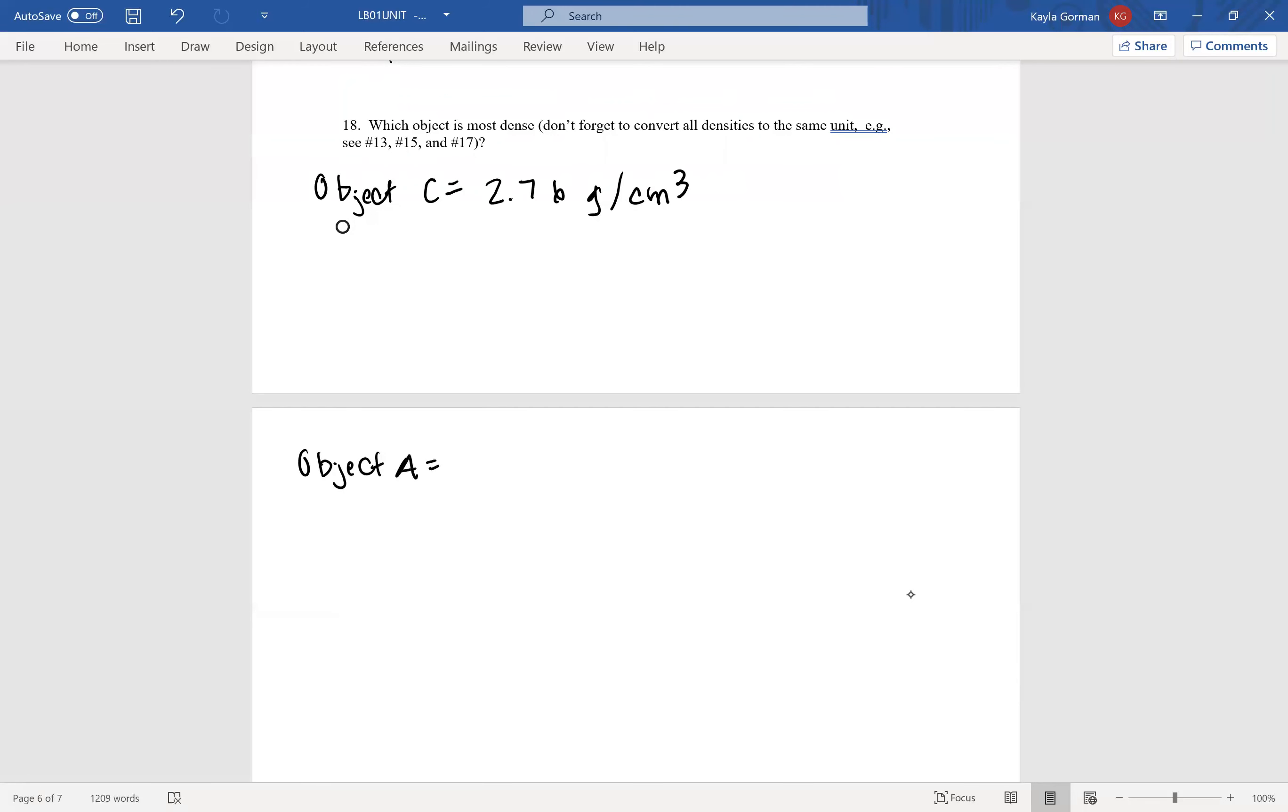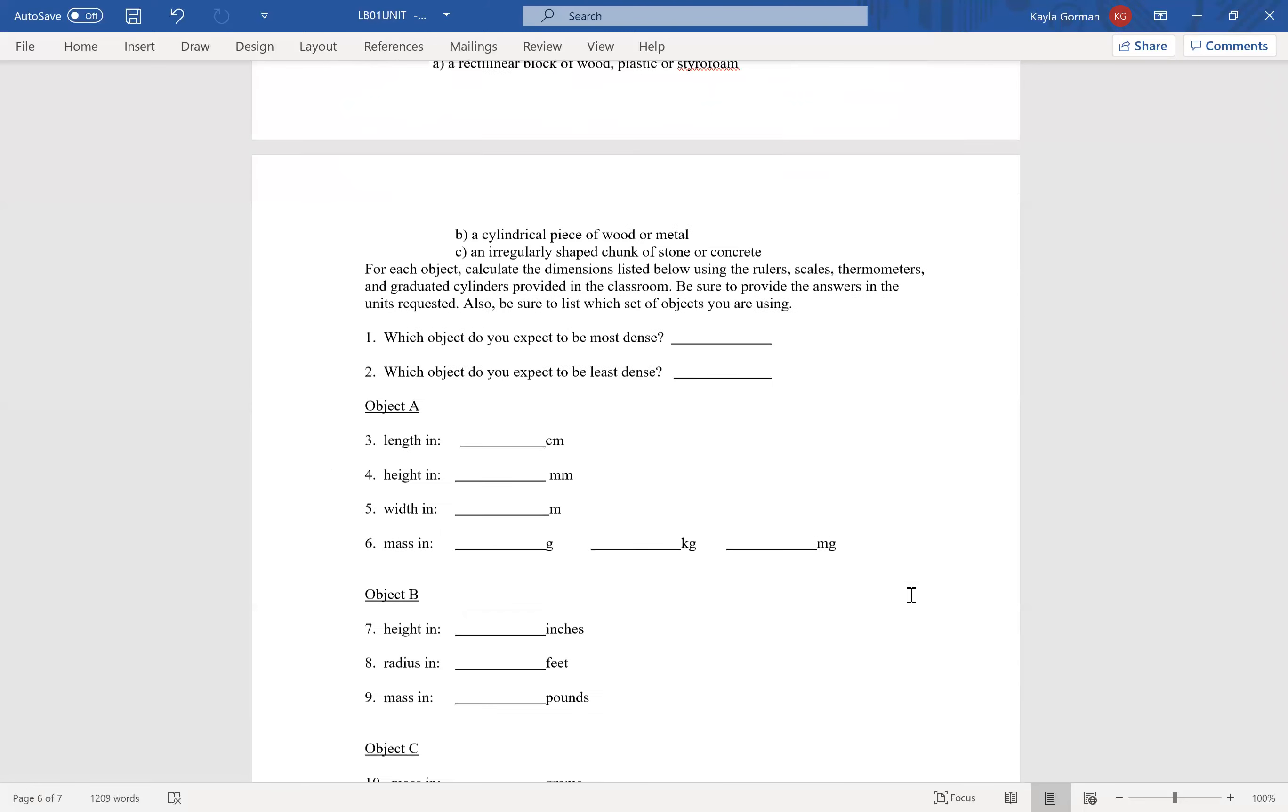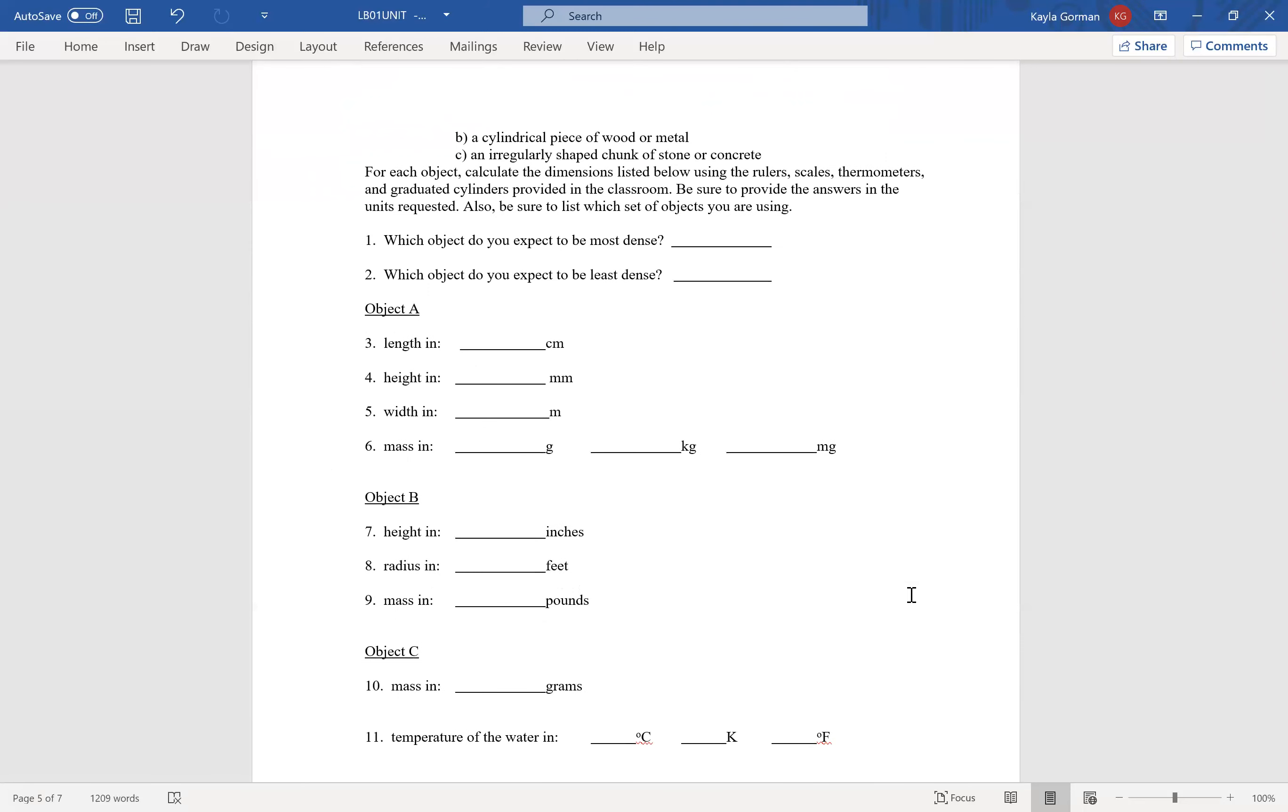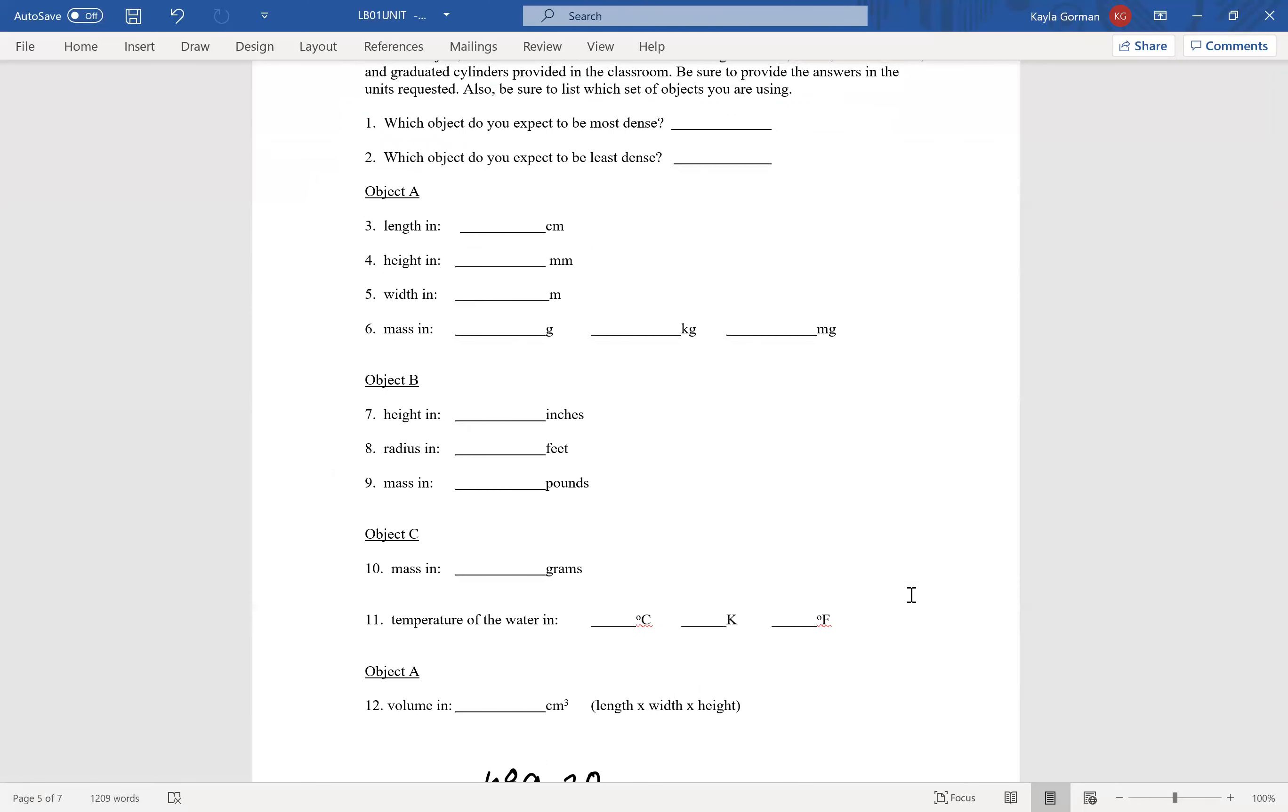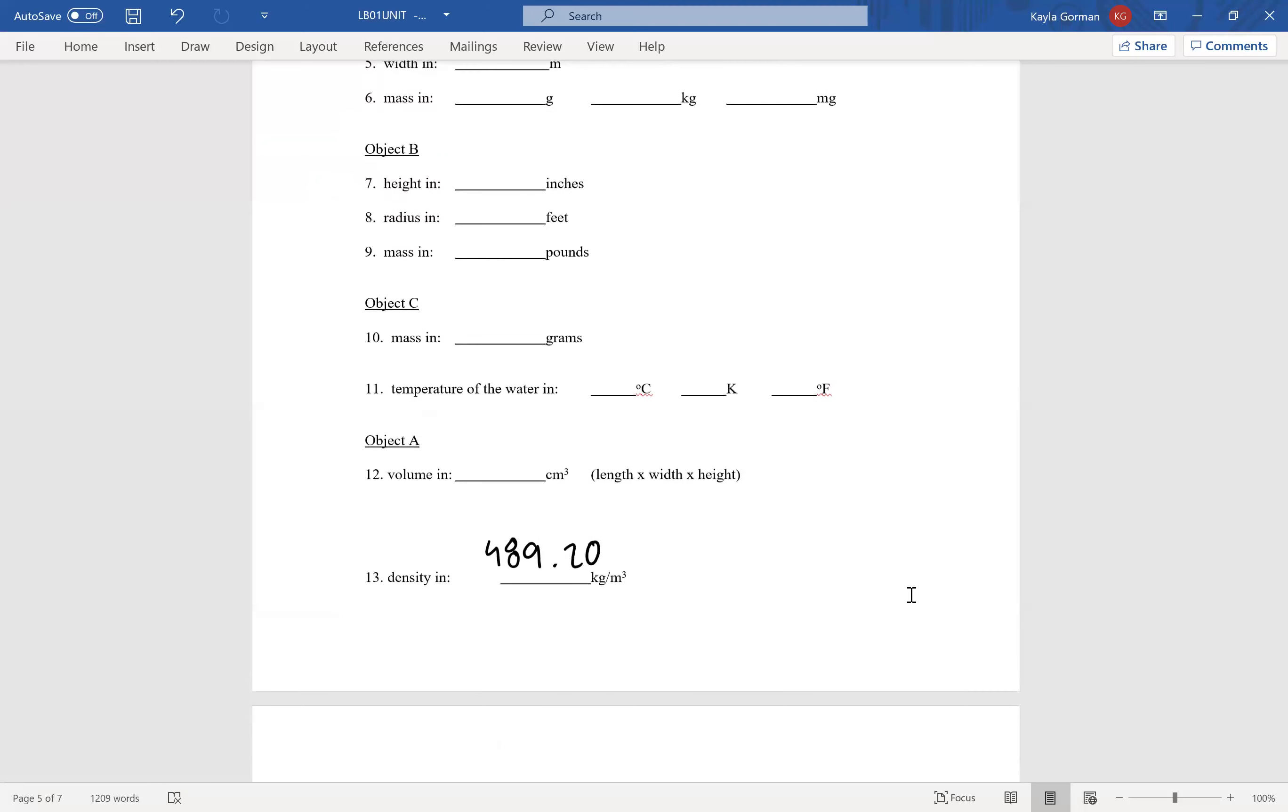So for Object A remember we did some work in centimeters, cubic centimeters, and we also did some work in grams. Remember we came up here and this is the original one without the numbers I added in, but I had given you the mass and you just had to find all of them in grams, kilograms, milligrams, and then we had found the volume in centimeters. Remember before we had to convert to get this density.